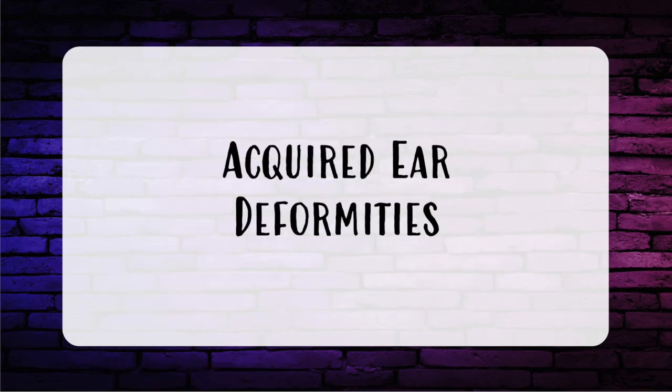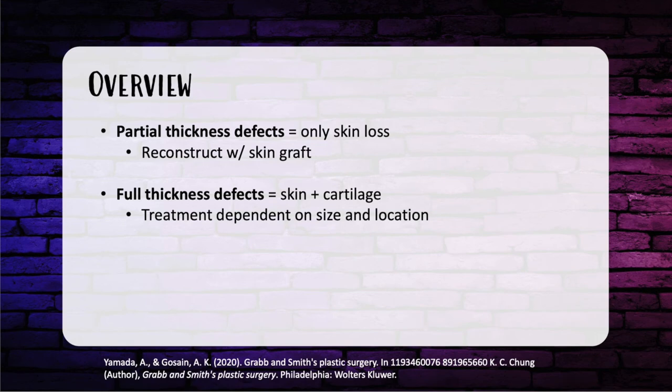Now let's focus on reconstructing acquired ear deformities from trauma or tumors. The first question to answer is: what's missing — skin only, or skin and the cartilage framework? Partial-thickness ear defects, with just skin loss and perichondrium and cartilage intact, are reconstructed with a skin graft. For full-thickness ear defects — skin and cartilage both gone — management depends on the location on the ear and the size of the defect.